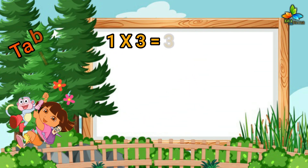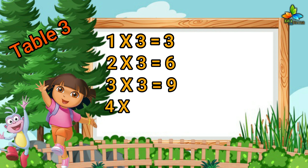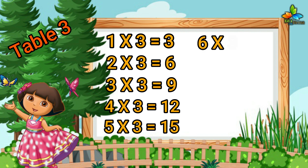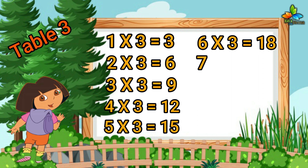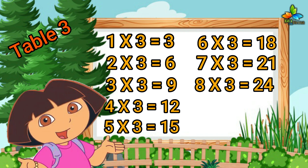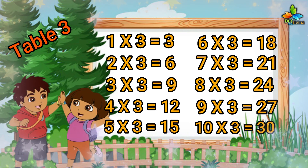1, 3 is 3. 2, 3 is 6. 3, 3 is 9. 4, 3 is 12. 5, 3 is 15. 6, 3 is 18. 7, 3 is 21. 8, 3 is 24. 9, 3 is 27. 10, 3 is 30.